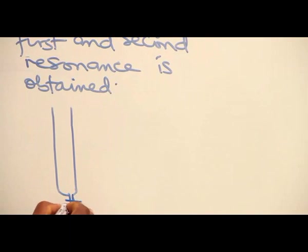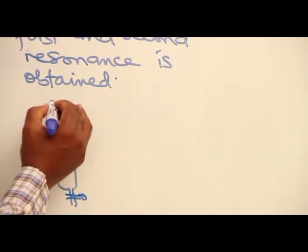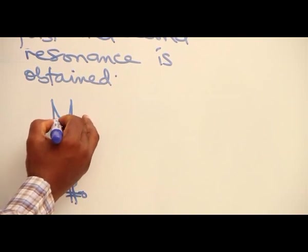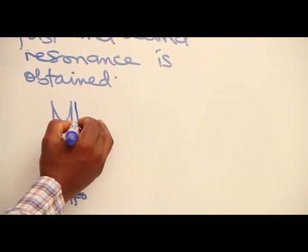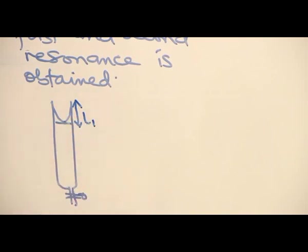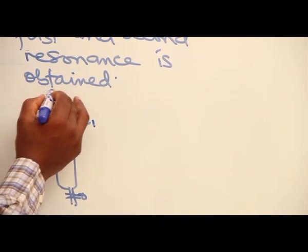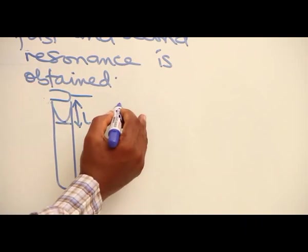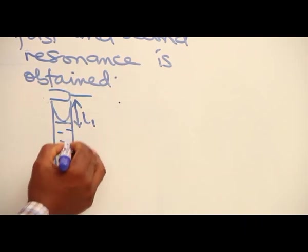We have a resonance tube. L1 is the position of first resonance. Then the tuning fork is still where it is on top. So, this is the water.